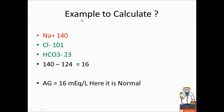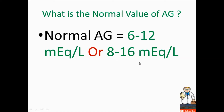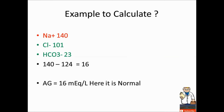Let's look at another example. Sodium is 140, chloride is 101, bicarbonate is 23. So 140 minus 124 equals 16 — anion gap is present. But think about both values: 6 to 12 or 8 to 16. For the exam, remember 6 to 12. With 16, it is considered normal — they won't confuse you with values. Anion gap equals 16 — here it is normal.